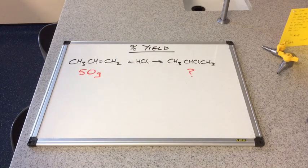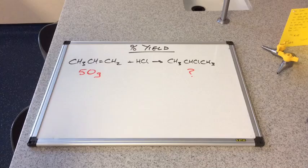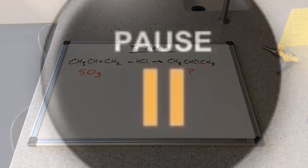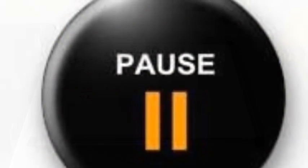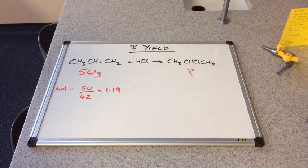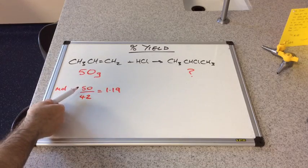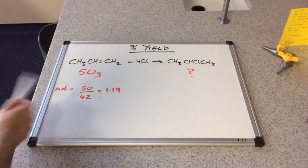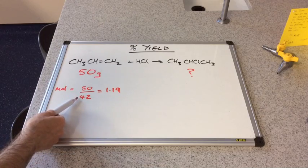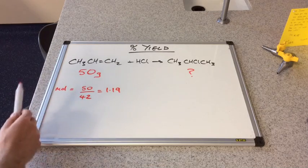If you want to pause the video, work that out and then let's see if you've got that right. The first thing we do is calculate how many moles of propene we've got. So we've got 50 grams. The MR of propene is 42 grams per mole.